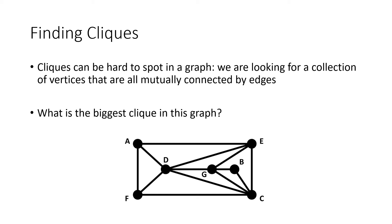It turns out it's vertex D, vertex E, vertex G, and vertex C. All of those vertices are all connected to each other by edges. D is connected to G, G is connected to E, G is connected to C, and E is connected to C. If you didn't find it, don't worry about it because it's pretty tricky to find. But again, keep your eye out for those kind of cliques because that's going to be giving us a handle on our chromatic number.